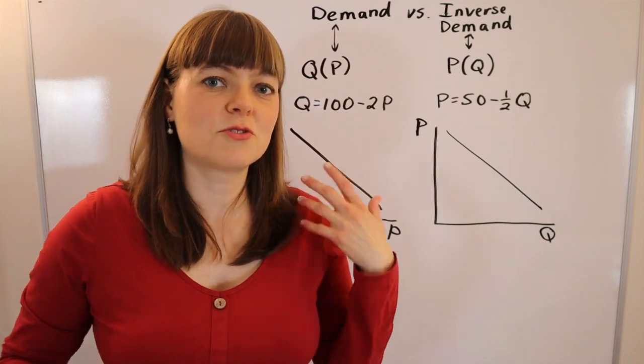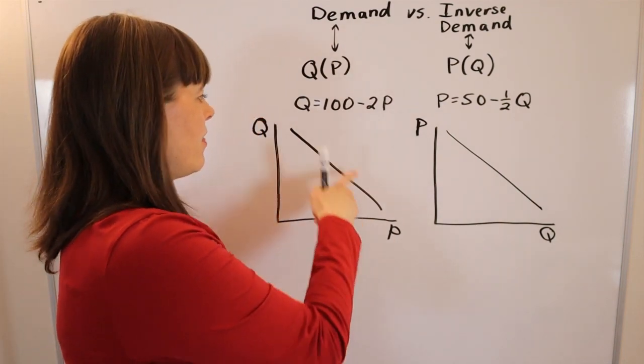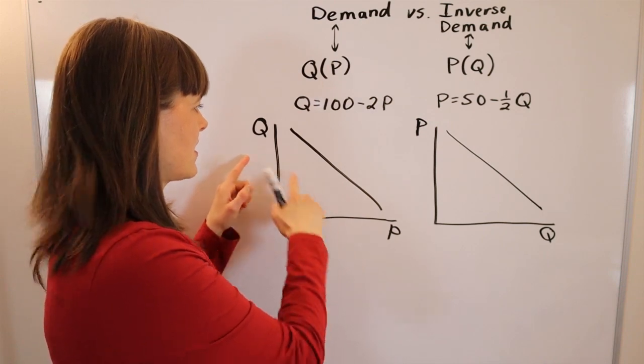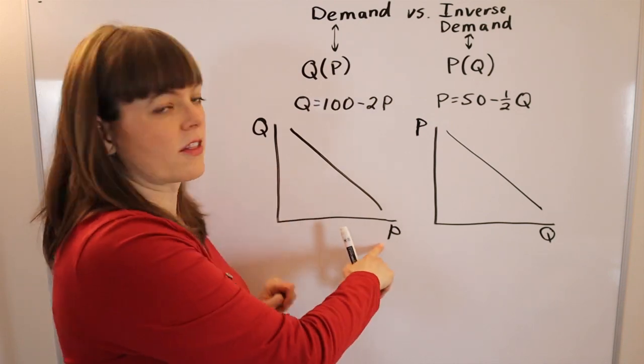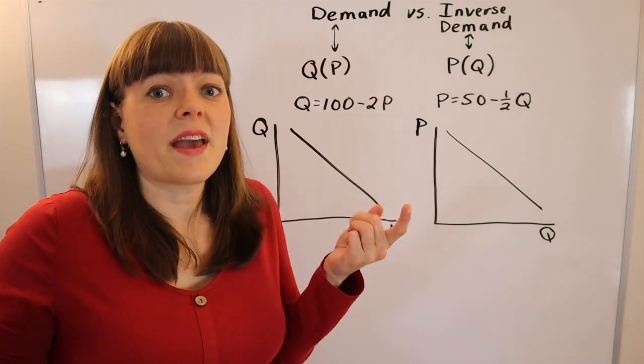As a matter of fact, if you do this the way other fields generally do, this would actually make more sense. Having quantity on the vertical axis, price on the horizontal axis. And why is that?